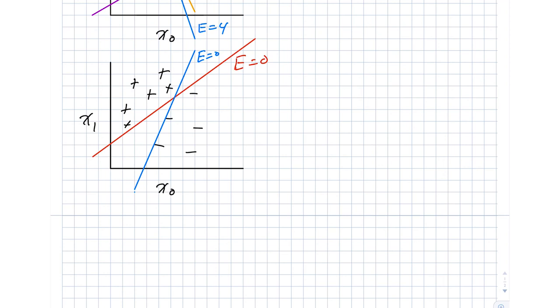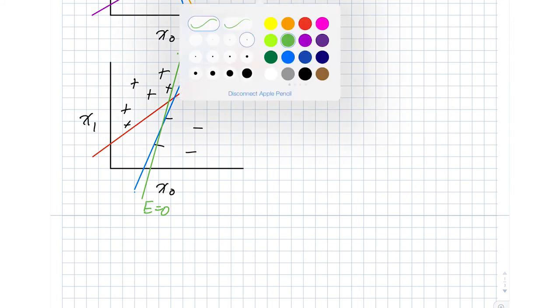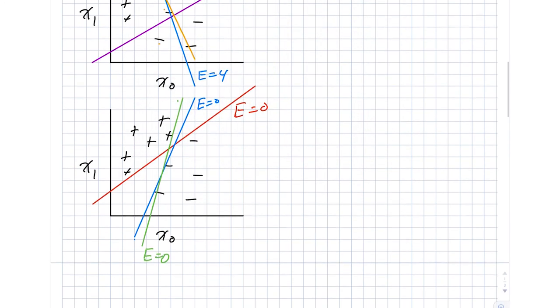But it's also the case that we could end up in a scenario where we have, say, this solution here. That's also the case that error is equal to zero. And we could even be more extreme. So let's put that one, let's start it right here. And that one also, error is equal to zero.